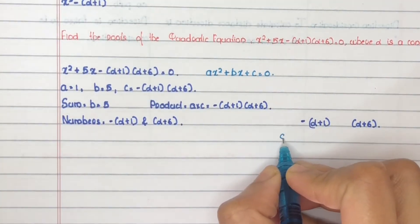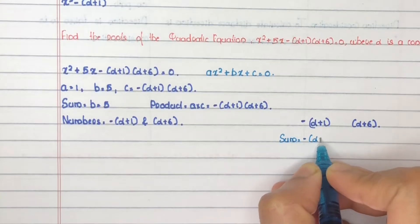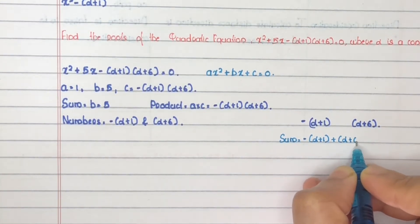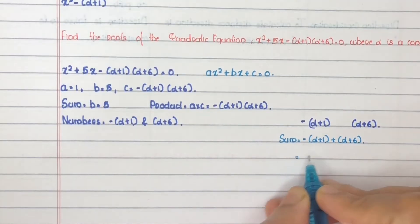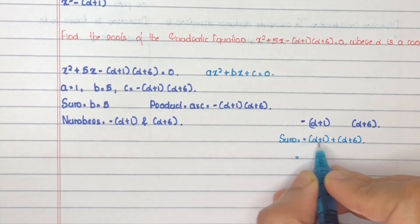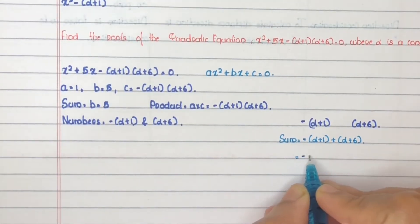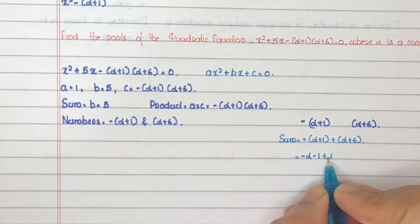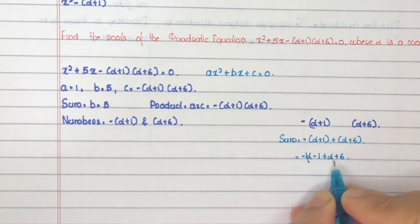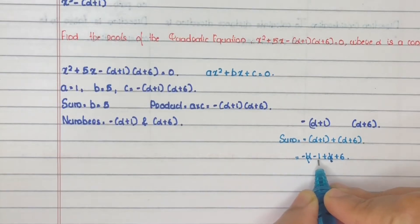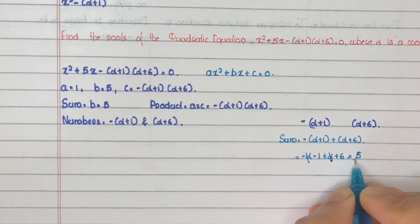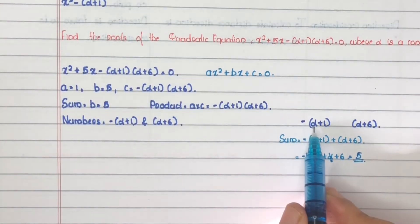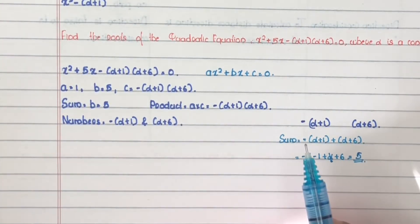Verify: sum equals minus(alpha plus 1) plus (alpha plus 6). Opening the bracket: minus alpha minus 1 plus alpha plus 6. The alpha terms cancel to give zero, and minus 1 plus 6 equals 5. So sum equals 5. Product equals minus(alpha plus 1) times (alpha plus 6). Both conditions are confirmed.